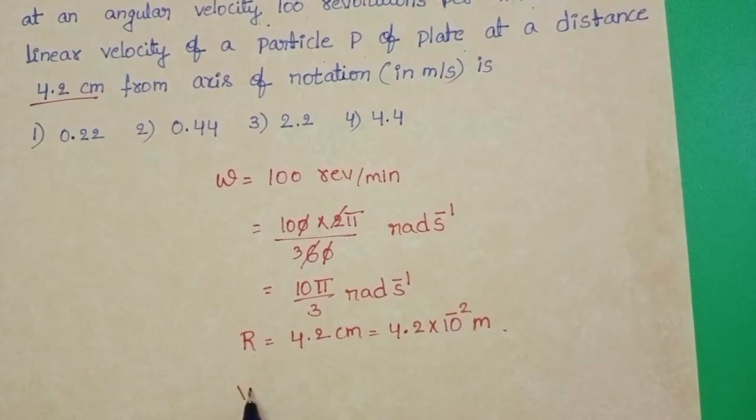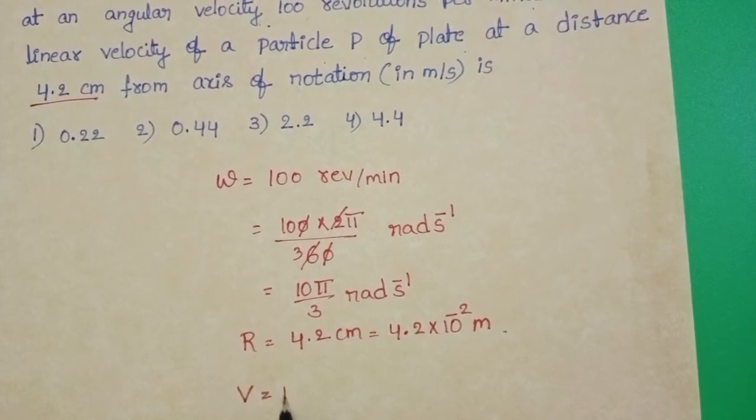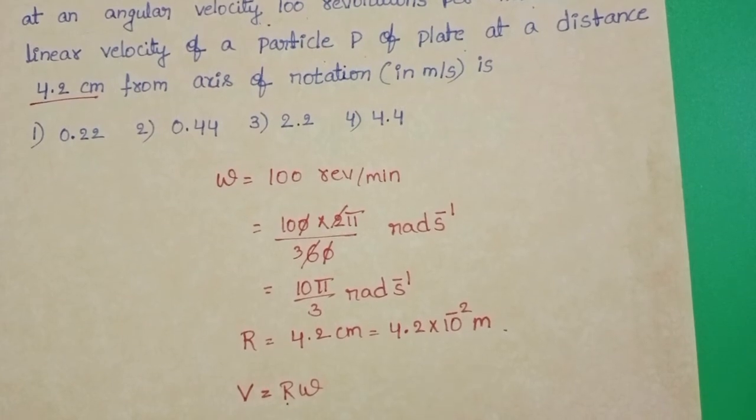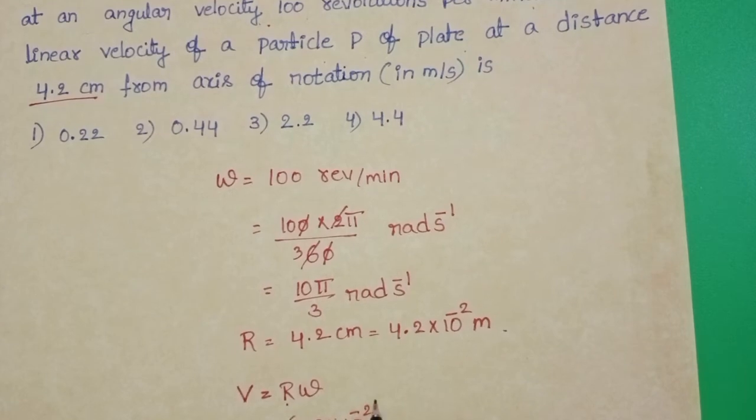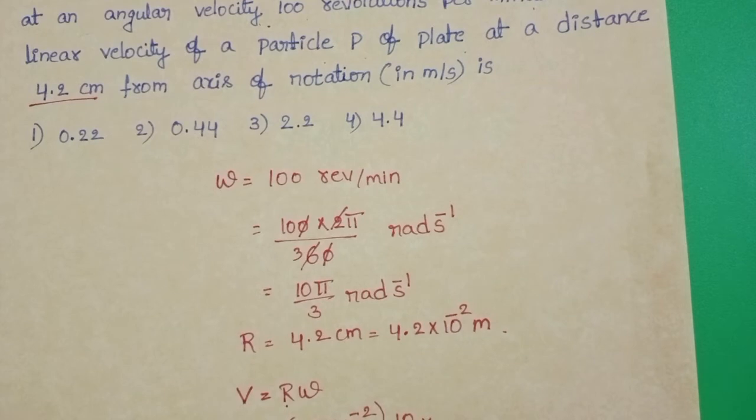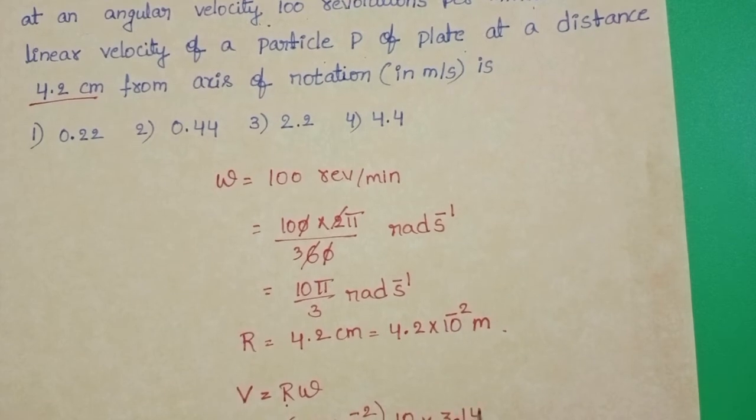The relation between linear and angular velocity is V equals R omega. In place of R, 10π by 3. In place of π substitute 3.14.